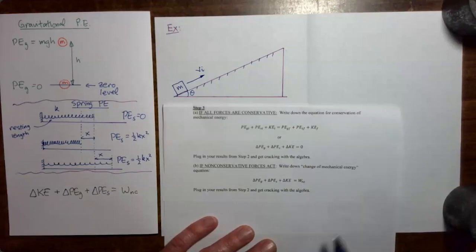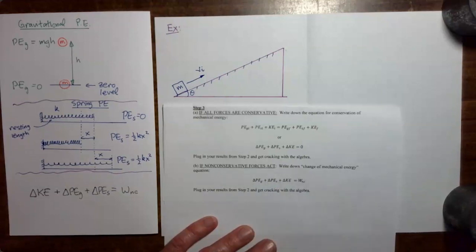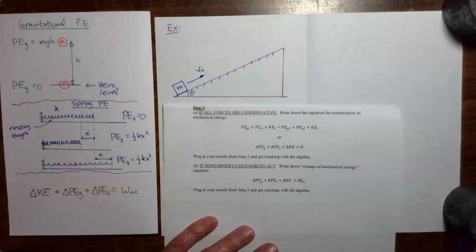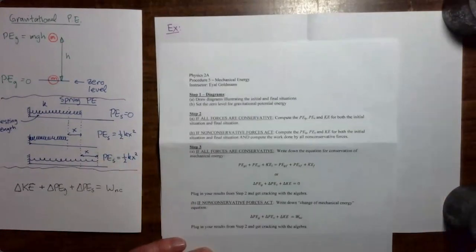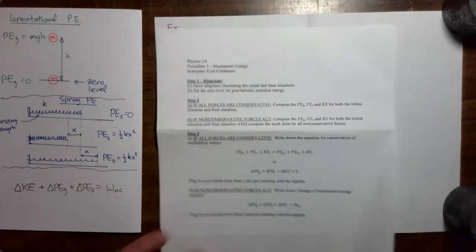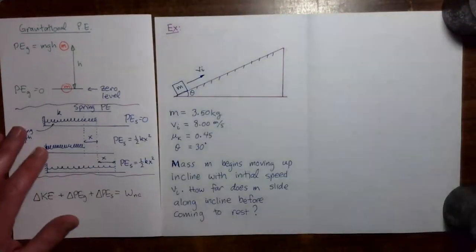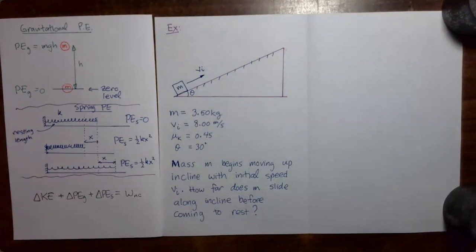So in this video, we're going to be using this version of the mechanical energy equation to solve an example problem. As with the previous example problems where only conservative forces were acting, we're going to be using this handout, which is available from the module introduction. This is a problem we could actually solve using other methods, but in order to get practice with this new method, we're going to be solving it using energy ideas.